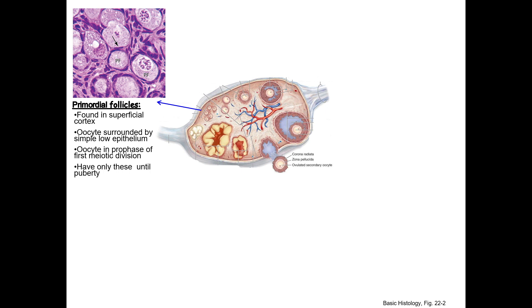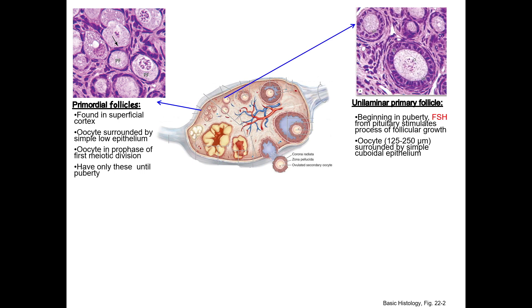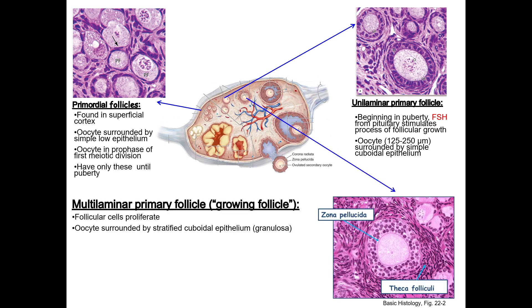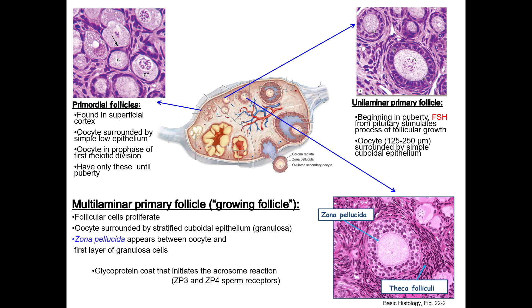Beginning at puberty, follicles begin growing and undergoing histological and hormonal changes. The oocyte enlarges with each subsequent stage. Under the influence of follicle stimulating hormone, the granulosa cells begin to proliferate, become cuboidal, and connect via gap junctions, forming a unilaminar primary follicle. As the follicle continues to grow, the granulosa cells continue to proliferate so the cuboidal epithelium becomes stratified. The oocyte and granulosa cells begin to secrete glycoproteins, forming a coat around the oocyte called the zona pellucida, which remains with the oocyte after ovulation, functioning to bind sperm and initiate the acrosome reaction.